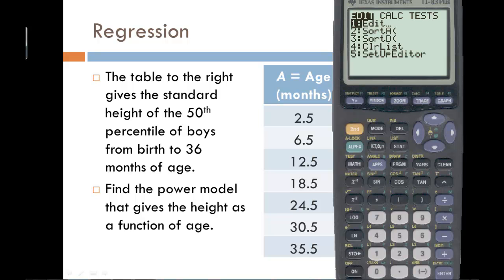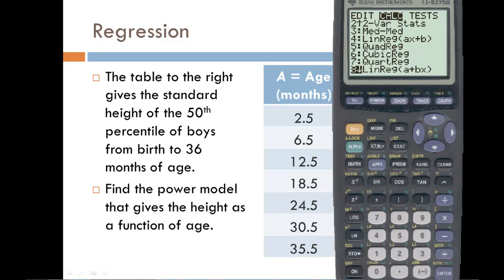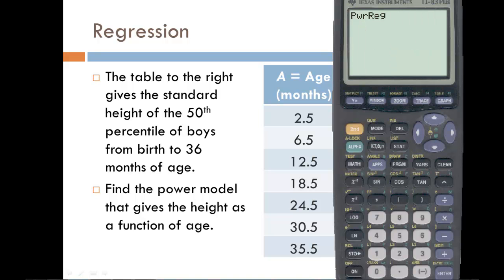I have to go back into the stat menu but this time I want to go to the calc menu, and we want to look for the power regression which if you look in the list is a capital A. So select that, and it'll put us on the home page and we can press enter to compute the power regression.